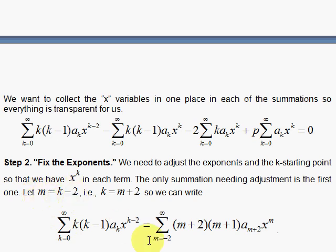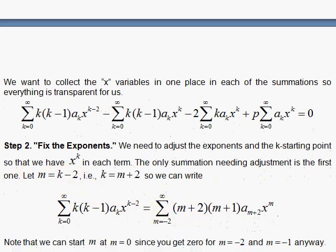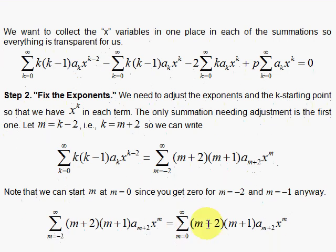Infinity stays the same since infinity plus or minus 2 is infinity. Then k is m plus 2, and if you knock one off there, you get m plus 1. k is replaced with m plus 2, and k minus 2 is replaced by m. So there we have it with the m's, and here we notice that if m equals minus 2, you get 0. m equals minus 1, you get 0. So we can just as well start the m with 0.